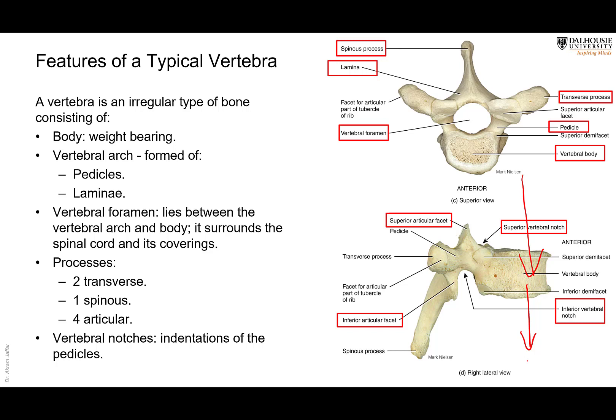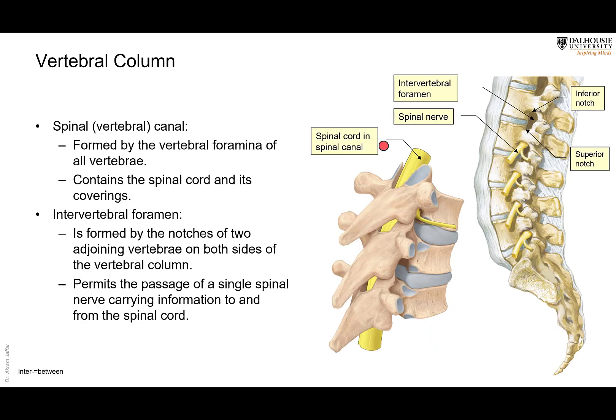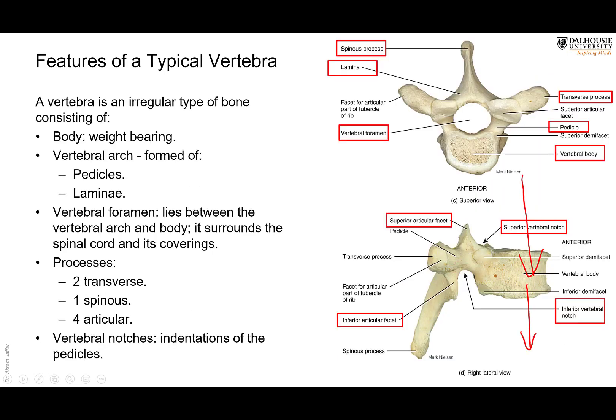Cervical vertebrae don't have large bodies, but as we descend to the lumbar region the bodies become progressively larger. In the sacrum, the size becomes smaller again because body weight is transmitted to the lower limbs. Behind the body is the vertebral arch. The arch and the body together surround a space called the vertebral foramen. When vertebrae are stacked on top of each other, these foramina form the vertebral canal.